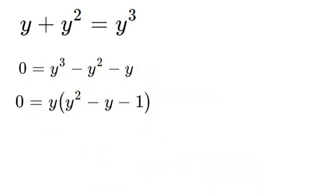Now that we've done that, we can factor out a y. So y times y squared minus y minus 1. Now we need to solve for 0. In order to get 0, we just need one of the sides of the equation to be equal to 0 since it is multiplication.